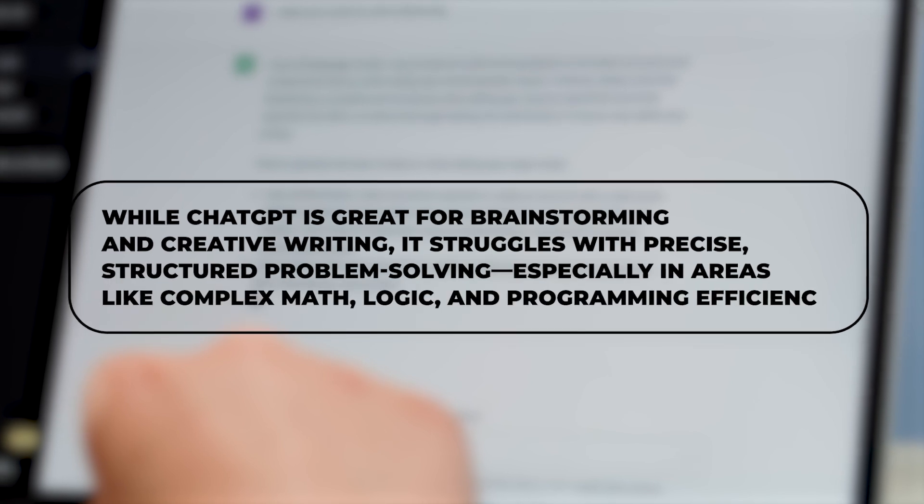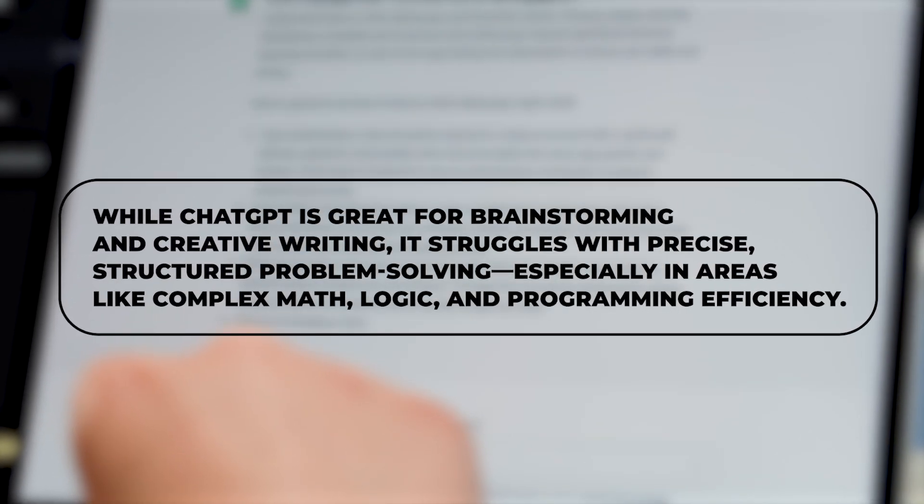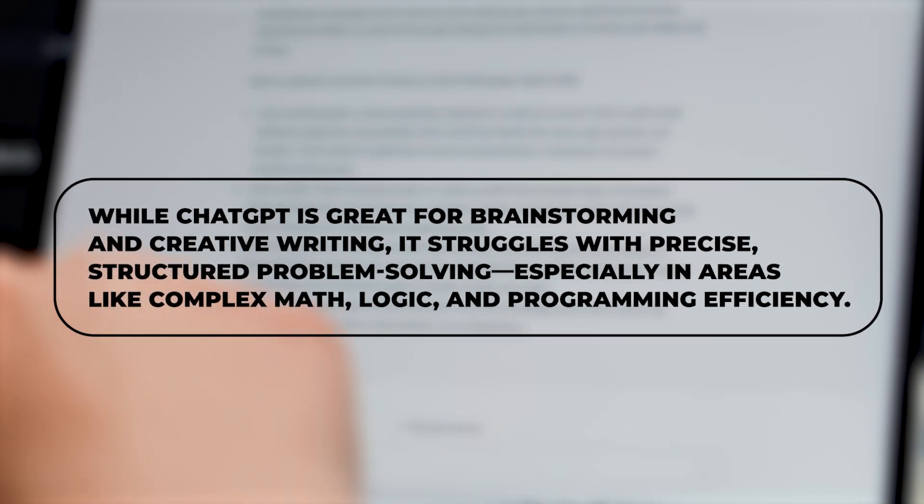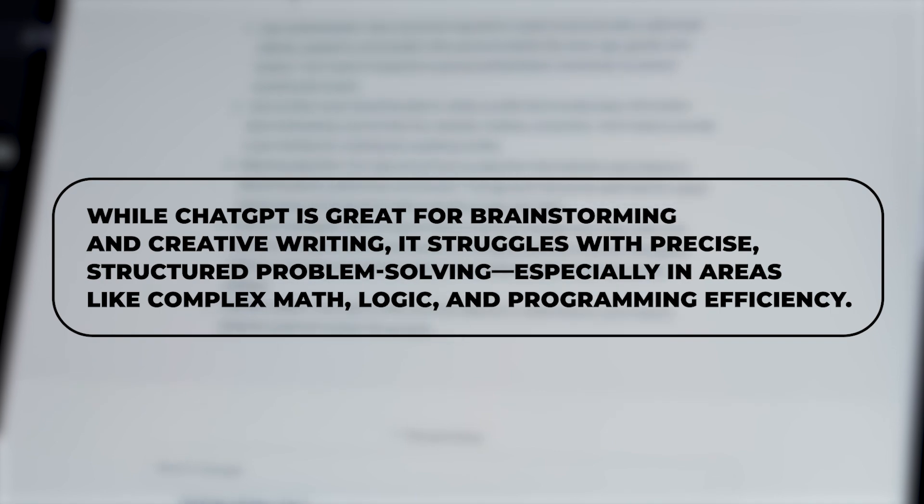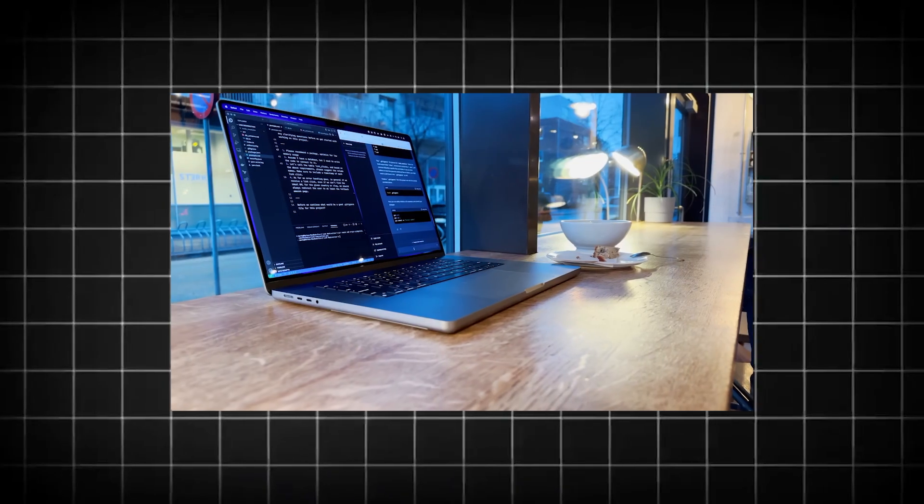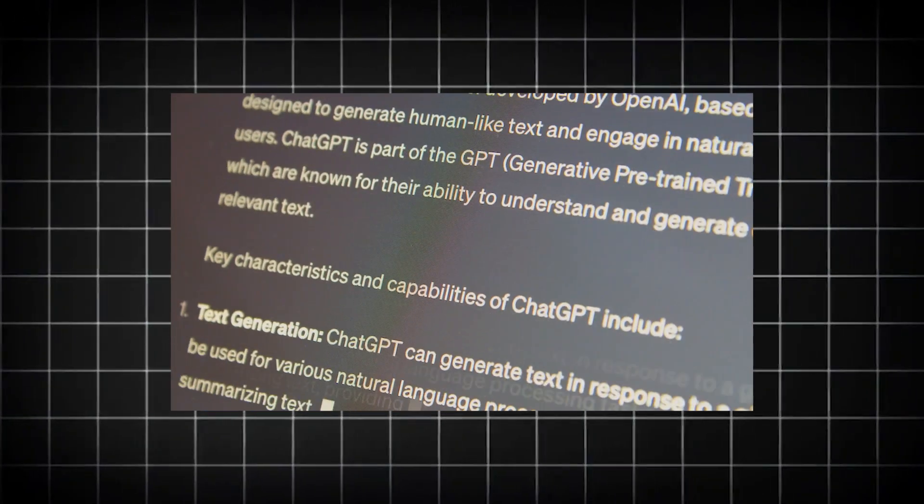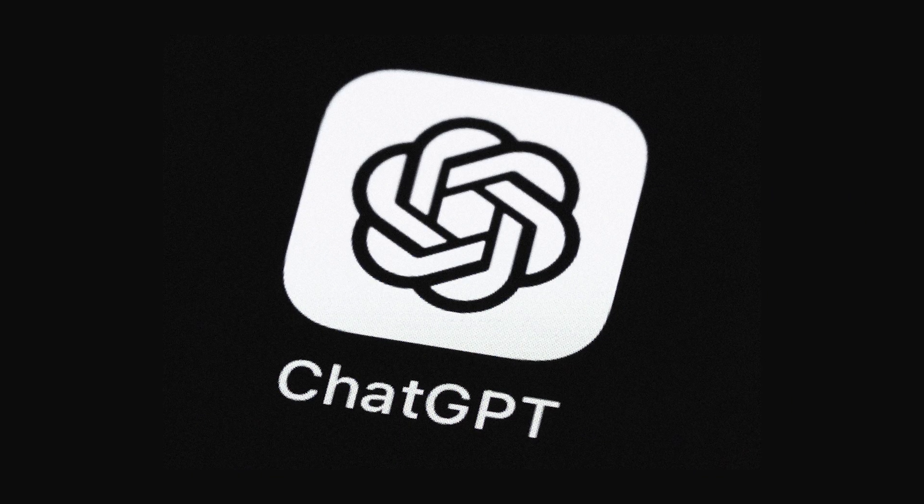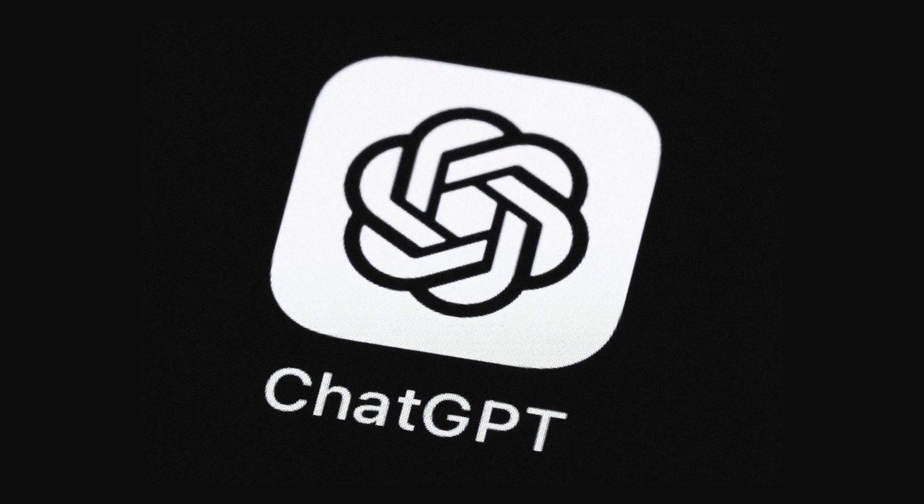While ChatGPT is great for brainstorming and creative writing, it struggles with precise or structured problem-solving, especially in areas like complex math, logic, and programming efficiency. For example, if you give it a multi-step physics equation, it might understand the problem conceptually, but miscalculate or make incorrect logical jumps in its solution.